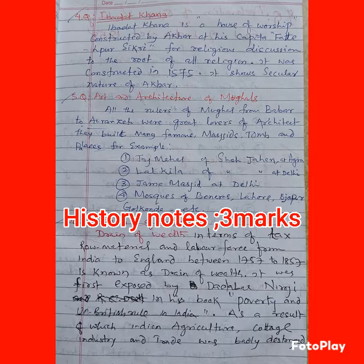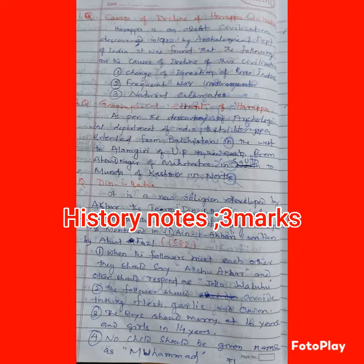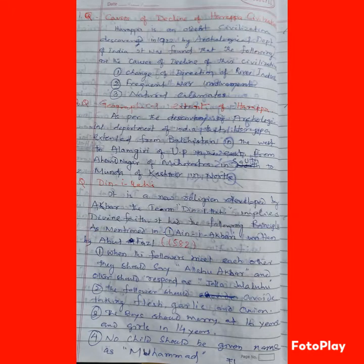The geographical extent: cover from west to east, then north to south. From west to east, from Baluchistan of Afghanistan to Alamgiri of Uttar Pradesh in the east. And from Manda of Kashmir in the north, to the south up to river Narmada.